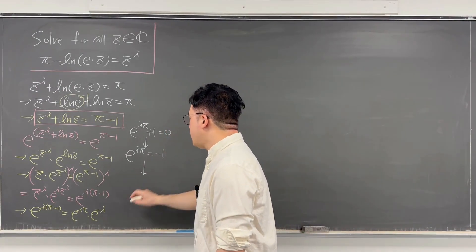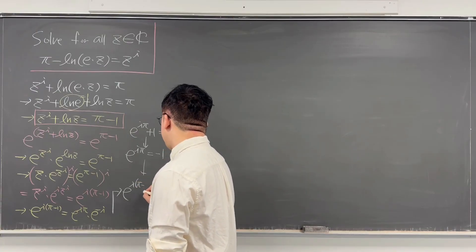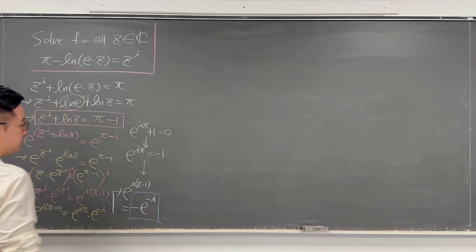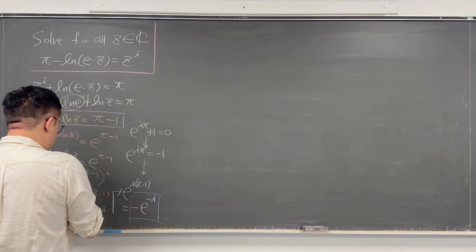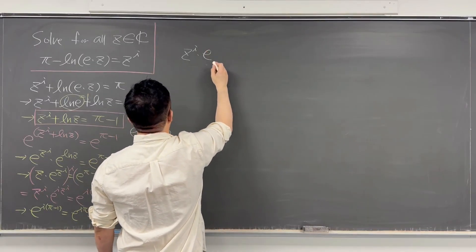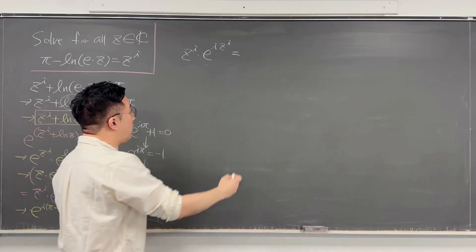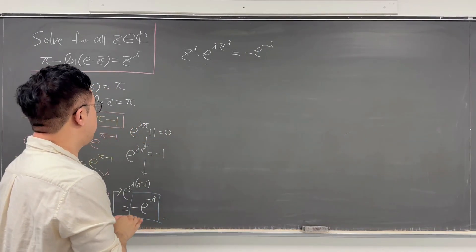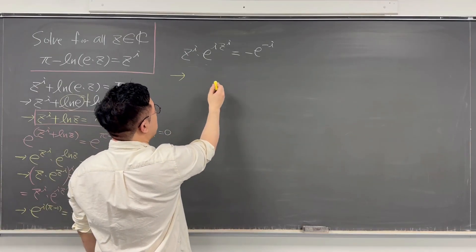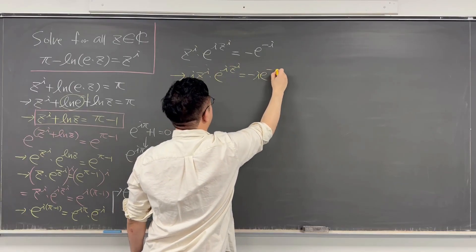So we can rewrite e to the power of i(pi minus 1) as negative e to the power of negative i. Using this, the equation becomes z to the power of i times e to the power of i times z to the power of i equals negative e to the power of negative i. Multiplying both sides by i, we get i times e to the power of i times z to the power of i equals negative i times e to the power of negative i. We can now apply the Lambert W function form.